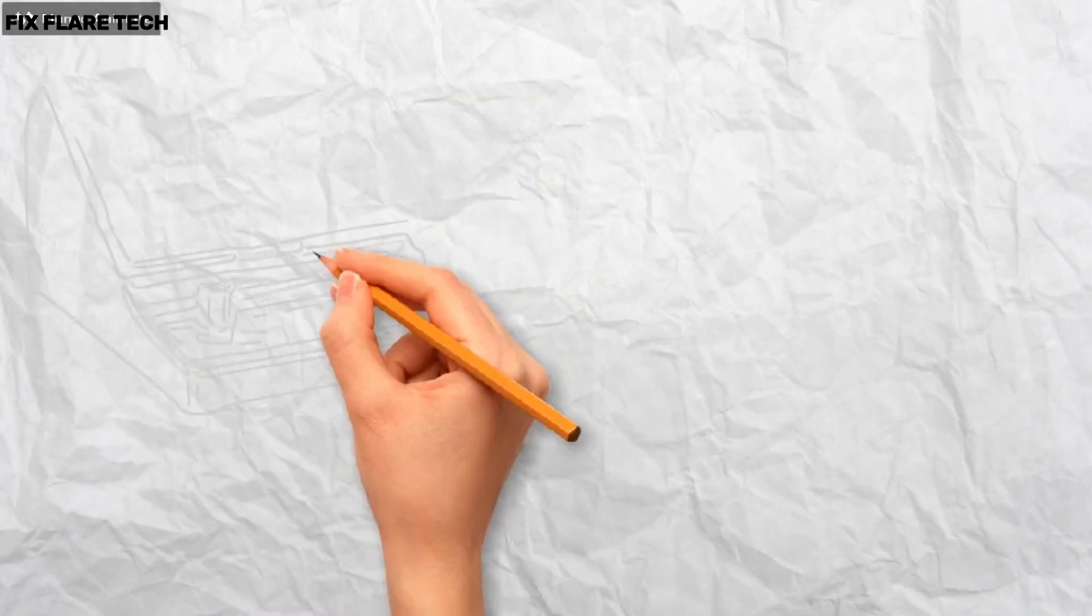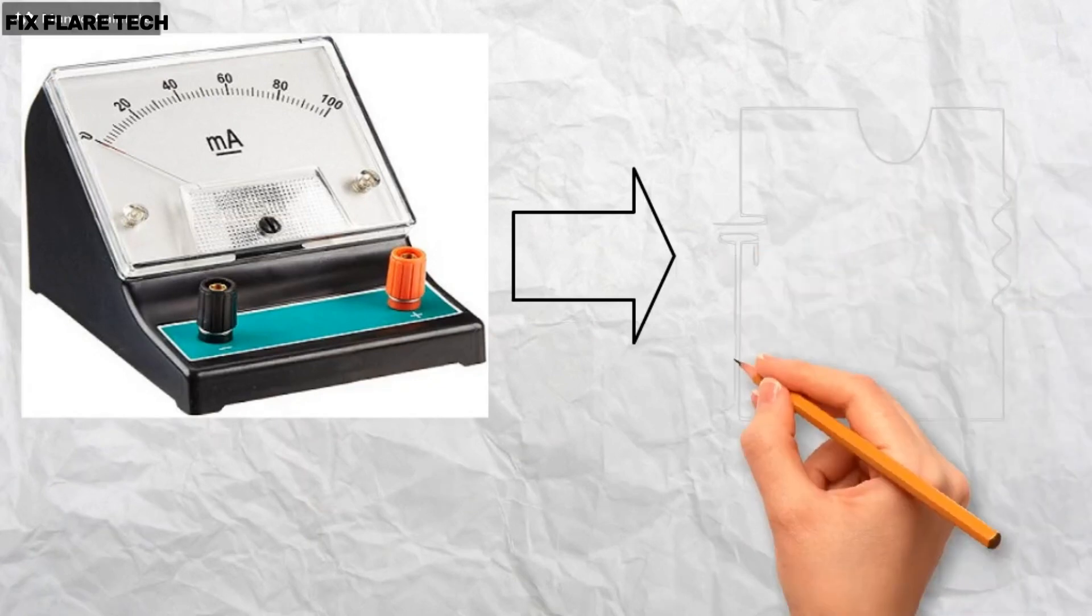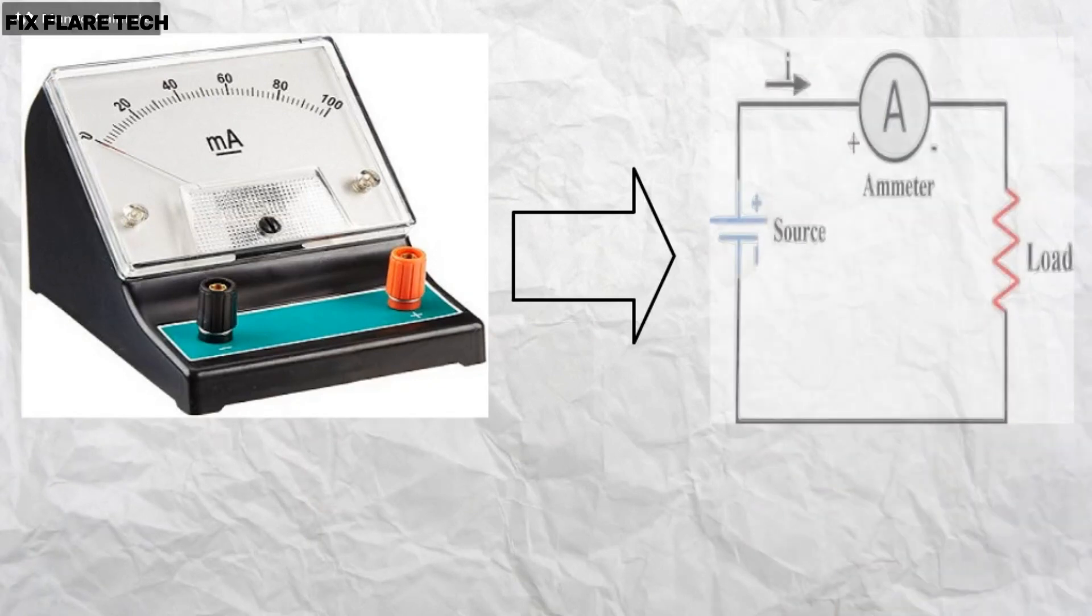An instrument called ammeter measures electric current in a circuit. It is always connected in series in a circuit through which the current is to be measured.